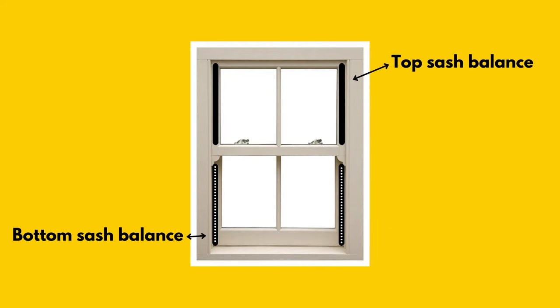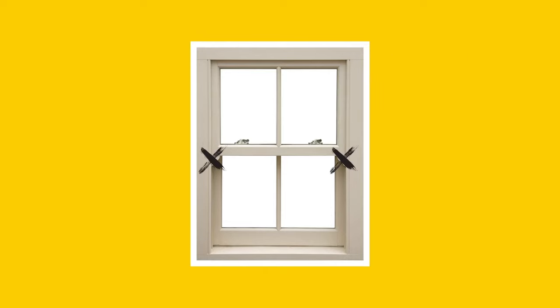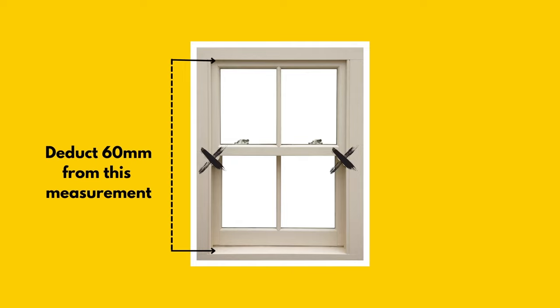If you're trying to replace the top sash of a double hung window and your window does not have a horn, when measuring your overall window height, deduct 60 millimetres off your measurement, as our tool assumes your window has a horn.